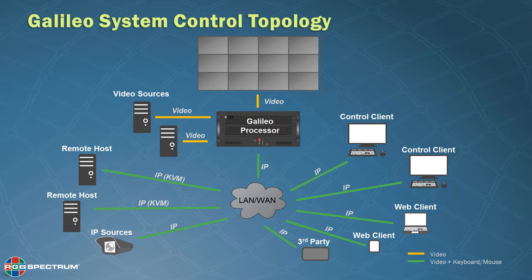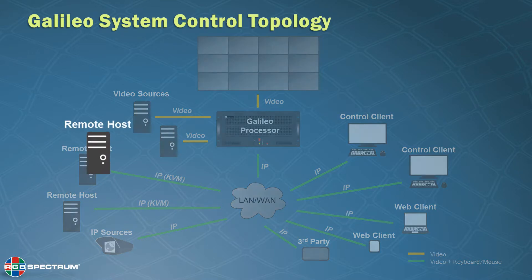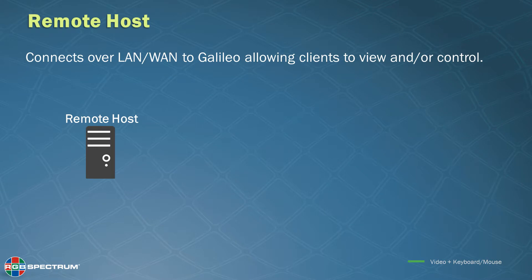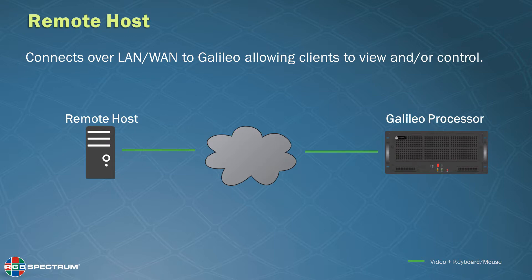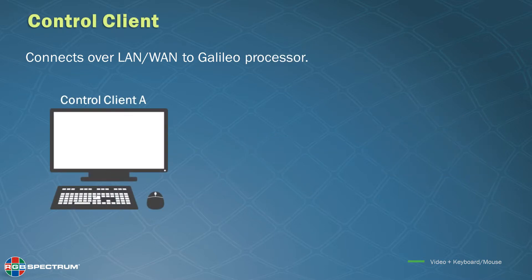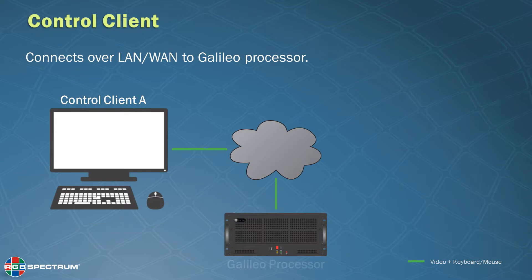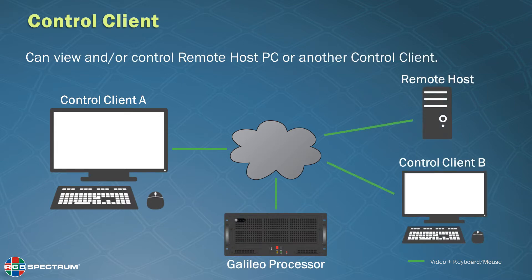Let's take a closer look at Galileo's remote host capabilities. The remote host connects to a LAN or WAN to the Galileo processor, and will allow any client to view and or control that host. The Galileo control client also connects via the LAN or WAN to the Galileo processor. The control clients can view or control a remote host PC or another control client.